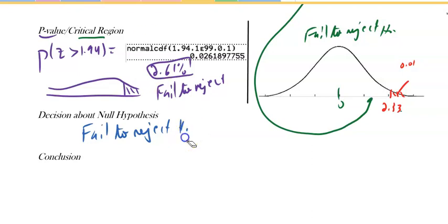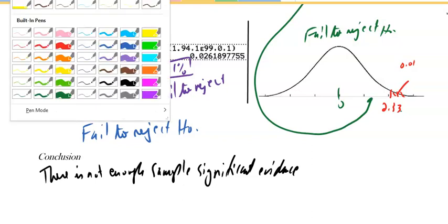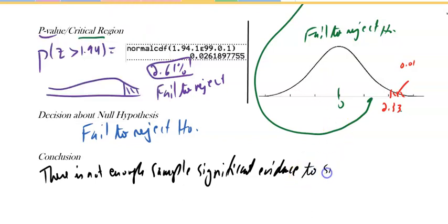Our conclusion is there is not enough significant evidence to support the claim. Once you get to the word claim, you could restate exactly what it says. You add the word 'true,' and if you don't start it, you'll say the true proportion of Inflaminex users.